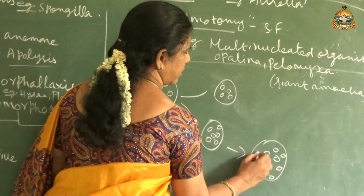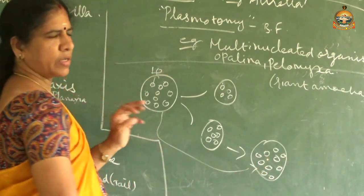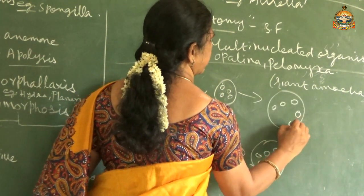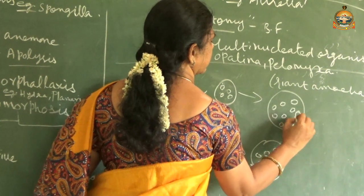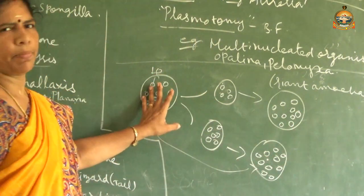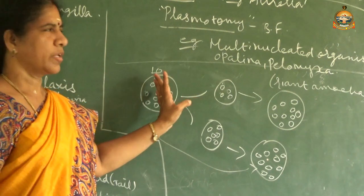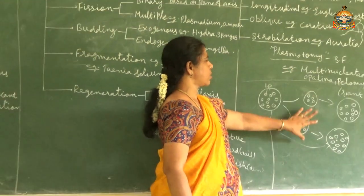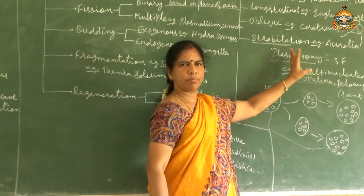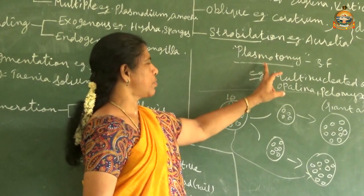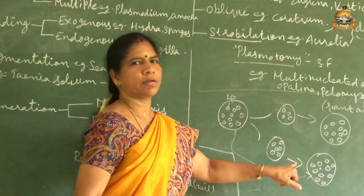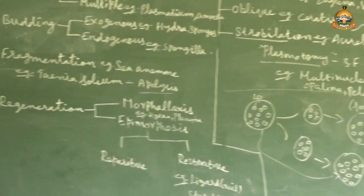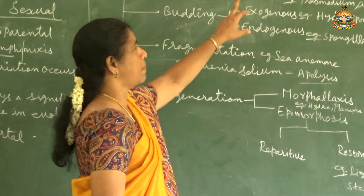For example, if the parent has nine nuclei and after division one daughter cell has only four nuclei and another has six nuclei, each must undergo repeated mitosis to restore the number to nine - equal to the parent. This special process of division in multinucleated organisms is called plasmotomy.